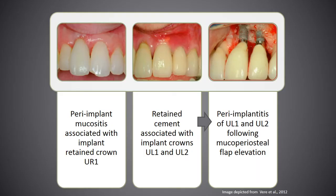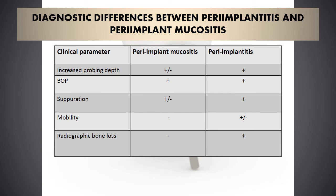Here are clinical photos to explain peri-implant diseases. The first is peri-implant mucositis associated with the implant-retained crown of the upper right one. The second photo shows retained cement associated with implant crowns of the upper left one and upper left two. The third photo shows peri-implantitis of upper left one and upper left two following muco-periosteal flap elevation. Peri-implant mucositis is always accompanied by bleeding on probing, and sometimes with increased probing depth and suppuration, but mobility and radiographic bone loss are not seen. Peri-implantitis, on the other hand, always presents with increased probing depth, bleeding on probing, suppuration, and radiographic bone loss; mobility may be present or absent.